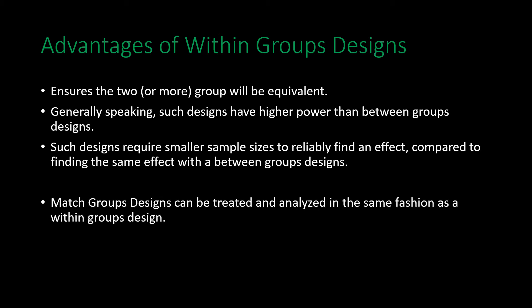It is important to note that matched group designs, while not technically within groups designs, can be treated and analyzed in the same fashion. In a within groups design, the same people are in both groups — fast people are fast in both, slow people are slow in both. In matched designs, we take the fastest people and split them among the groups, and the slowest people and split them as well, which is ultimately very similar to a within groups design — hence we analyze them in the same way.